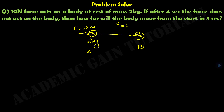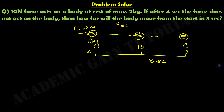After 4 seconds, the force does not act on the body — from point B, there is no force applied. The question asks: how far will the body move from the start in 8 seconds total? So from point A to point C is 8 seconds in total, and we need to find how far the body travels from A to C.